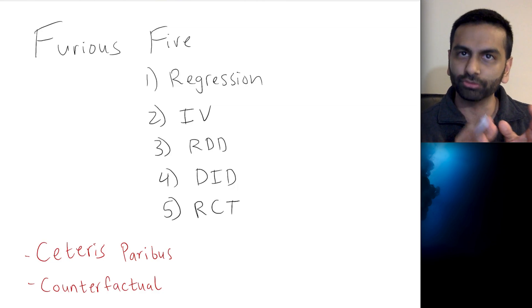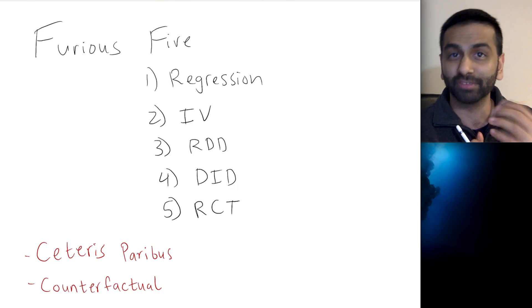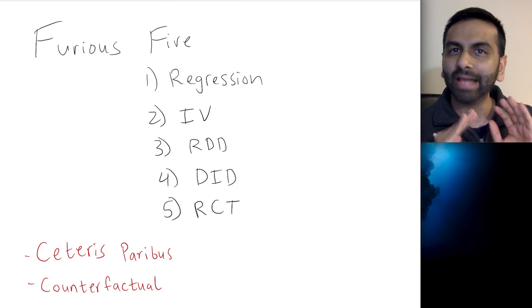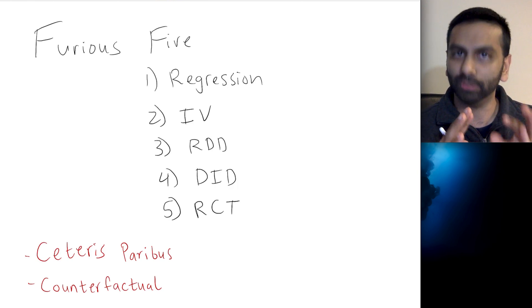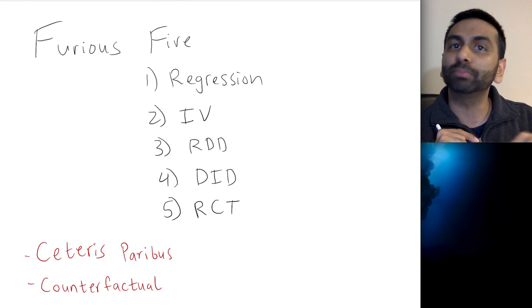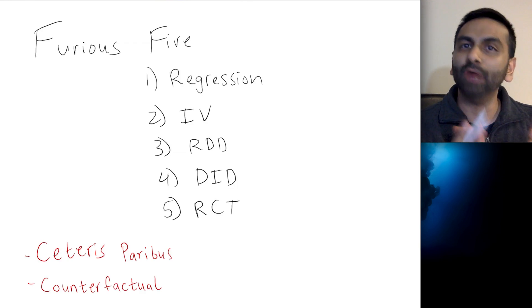You have a treatment group and a control group. And really, the name of the game is this. This is usually called the gold standard. The gold standard for establishing causality is a randomized control trial where you hold all else equal. Everything between the two groups have to be held equal. And then the only difference is that one group gets a treatment. And then you look at the difference in outcomes and see if there is one.